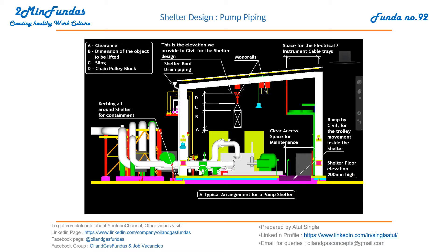If you look at the top, suppose we have to remove the spool piece or take the motor up — when we plan maintenance of any component, we need to calculate all these dimensions. This is the highest point, and we take a margin of clearance. B is the dimension of the object to be lifted — the height of the item being taken out for maintenance. C is the sling — the rope arranged like this to hold the item.